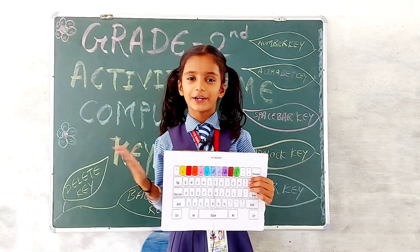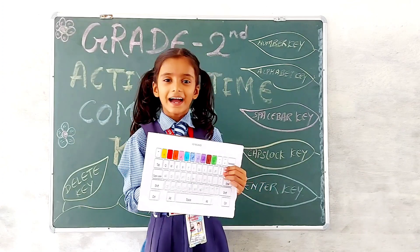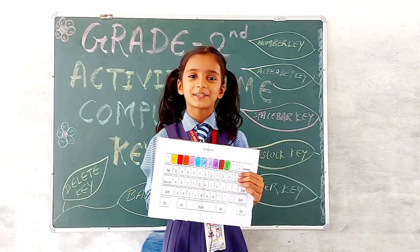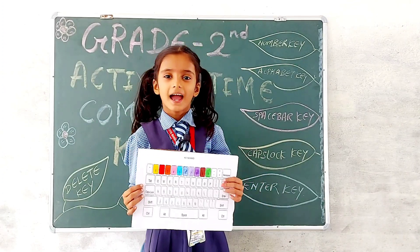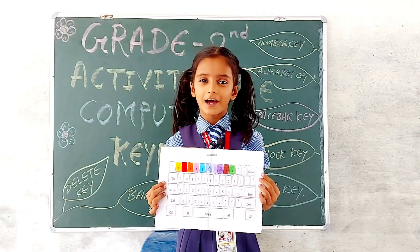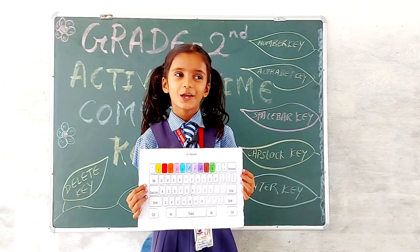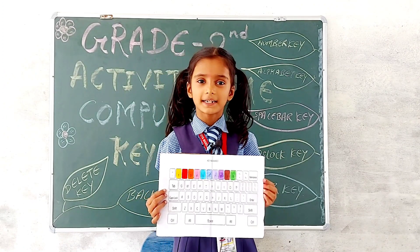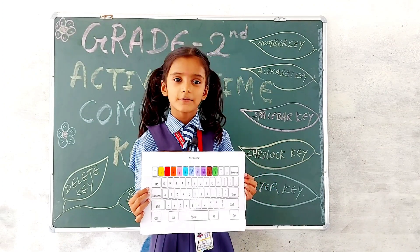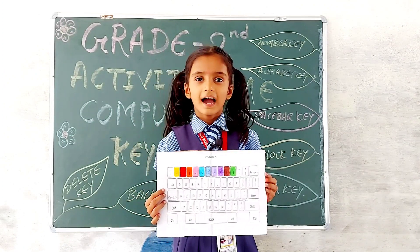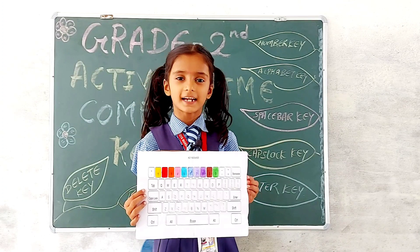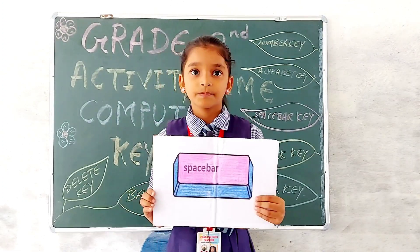Hello everyone. I am the number key, 10 in number, 0 to 9. I am above the alphabet keys. You can type your roll number and other numbers by using me. I am also present on the right side of the keyboard. Thank you.